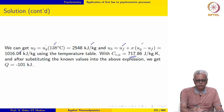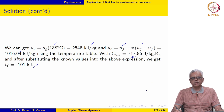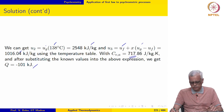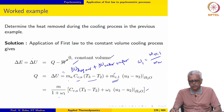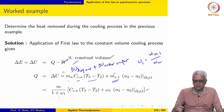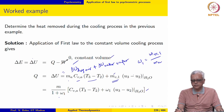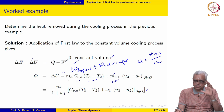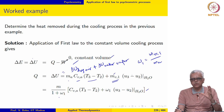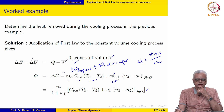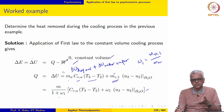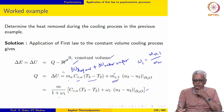Taking Cv of dry air to be 717.86 J/kg·K throughout and substituting the known values, we get Q to be minus 101 kJ. This illustrates that application of the first law to a psychrometric problem is no different from what we have done before.